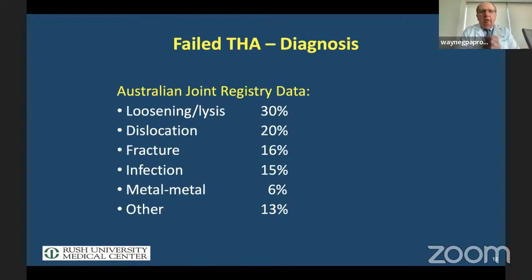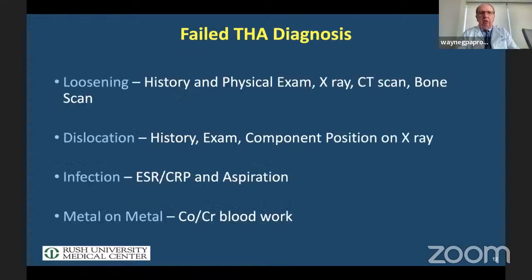According to the Australian Joint Registry, loosening is still the number one reason for revision. Certainly infection and dislocation are up there, but we're going to focus on bone loss that results from loosening. We need a good history and physical. Plain films are extremely important and we're now using 3D CTs much more often. We also want to understand whether there's been a previous history of dislocation, so we can potentially have constrained liners or dual mobilities present.